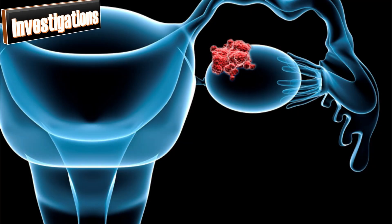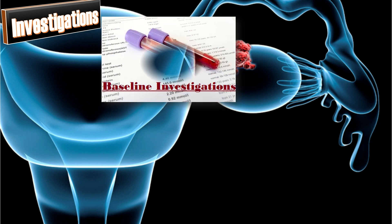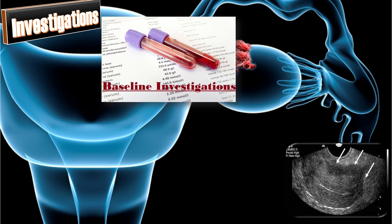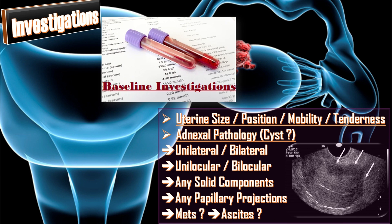After examination, we do appropriate investigations, starting with baseline investigations. We then do a transvaginal scan to assess the uterine size, position, mobility, and tenderness, any adnexal pathology, and whether any cyst is found. If a cyst is found, we check whether it is unilateral or bilateral, unilocular or bilocular, any solid components present, and any papillary projections present.